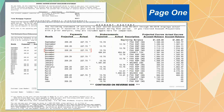If you see an asterisk next to an amount, it means there was a difference in the projected activity, either in the amount or the date. If you see an E next to an amount, it means the payment or disbursement has not yet occurred but is estimated to occur as shown.